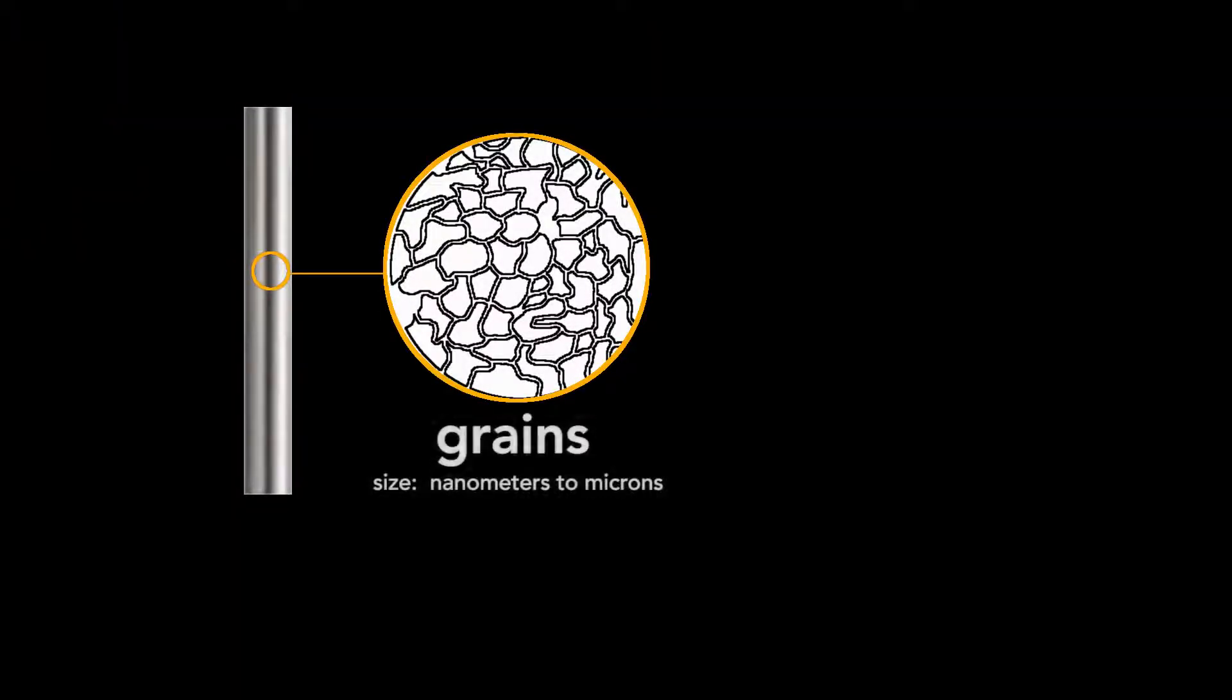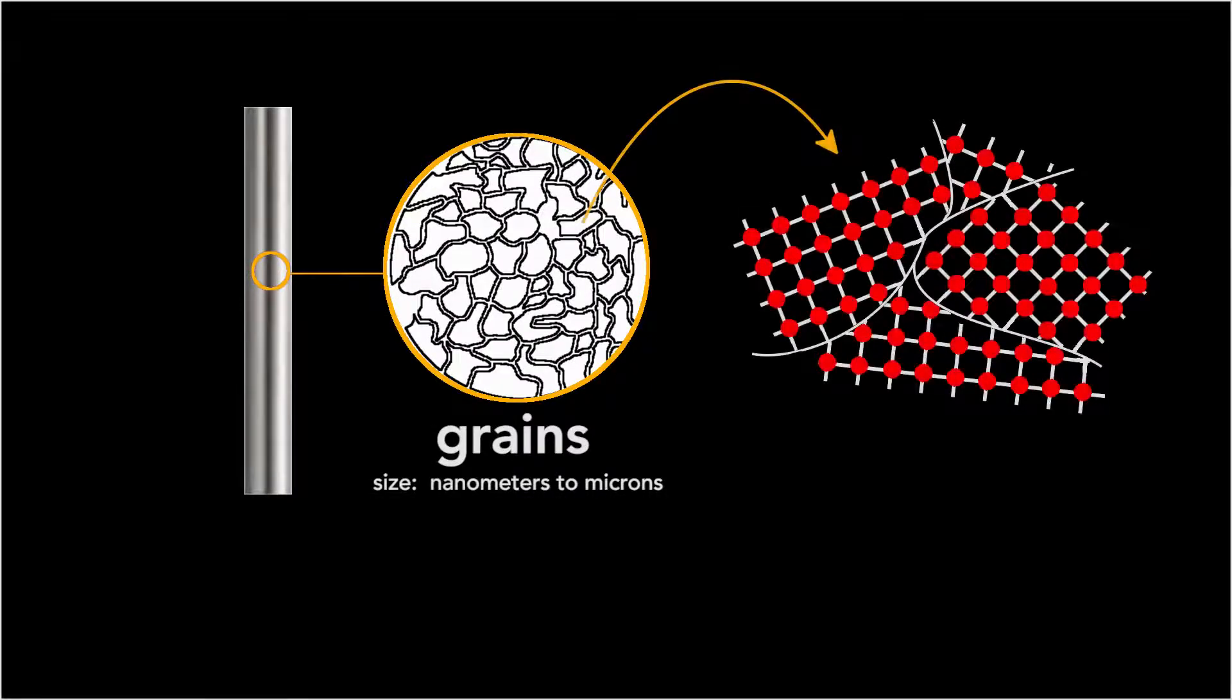Typically, any metal, whether nitinol or not, is comprised of small grains that, depending on the material, are microns to nanometers across. And each grain is comprised of atoms arranged in a regular repeating pattern.